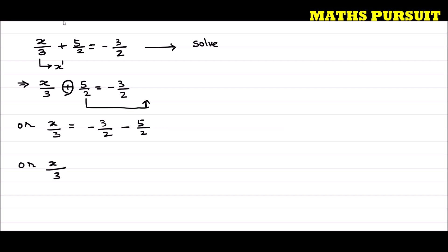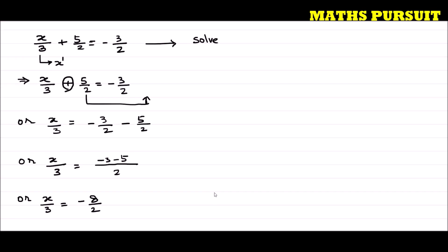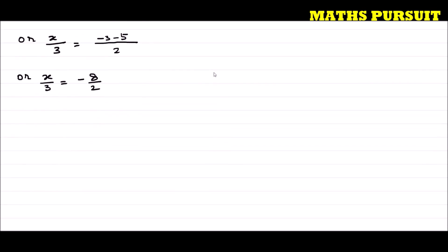Taking 2 as the LCM, I can write x upon 3 is equal to minus 3 minus 5 upon 2, which gives us minus 8 upon 2. Simplifying, x upon 3 is equal to minus 4.